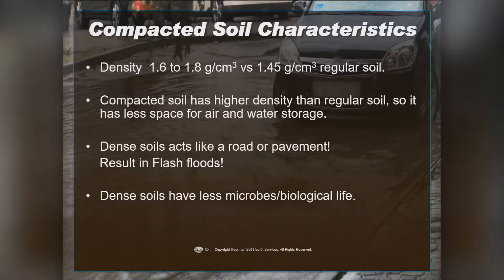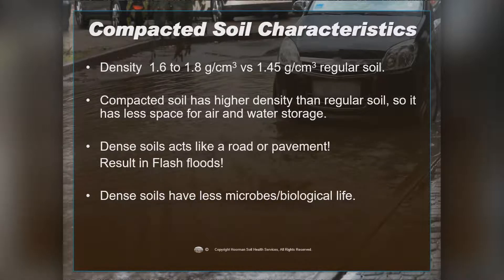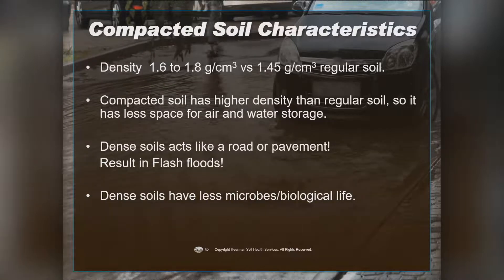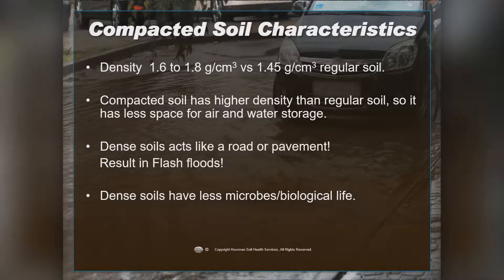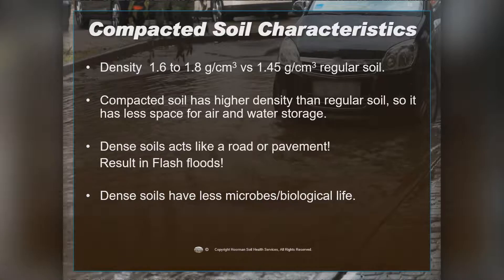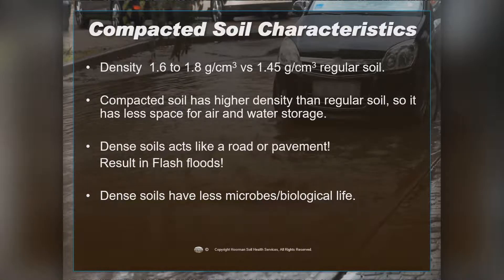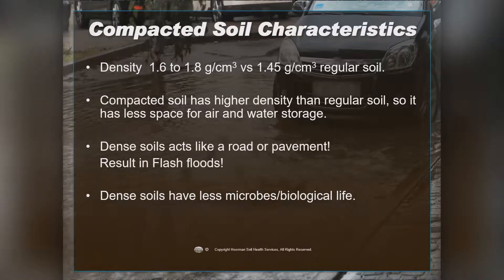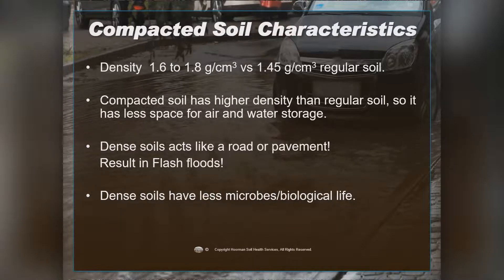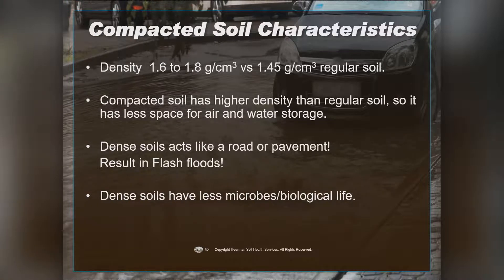Dense soils act like road pavement and result in flash floods. Compacted soils have higher density, so they have less space for air and water storage. Typically, when bulk density gets above about 1.6 to 1.8 grams per centimeter cubed, we're going to start to have issues with flooding and ponding water. Also, dense soils have a lot less microbial activity and biological life because they have less pore space.